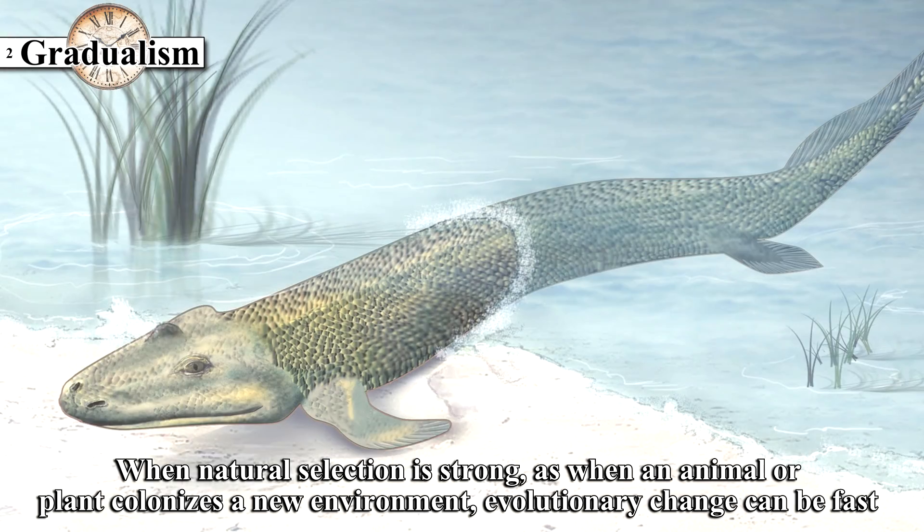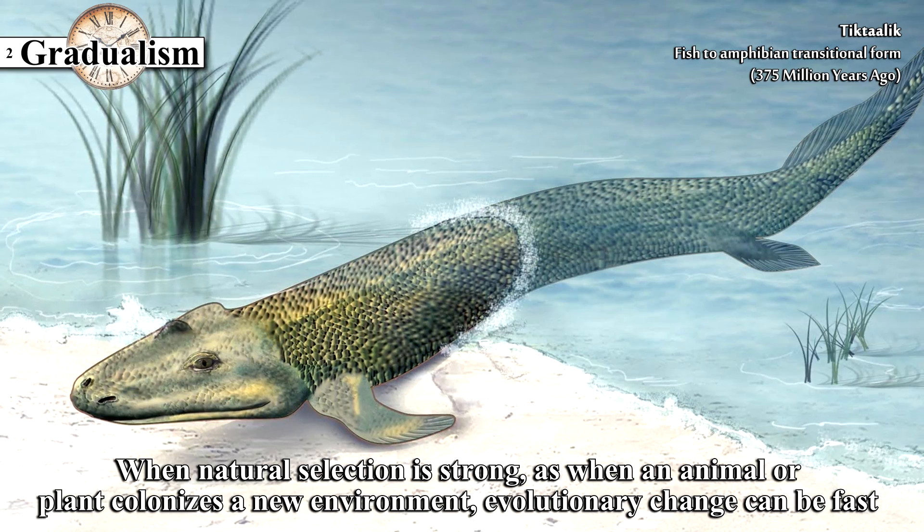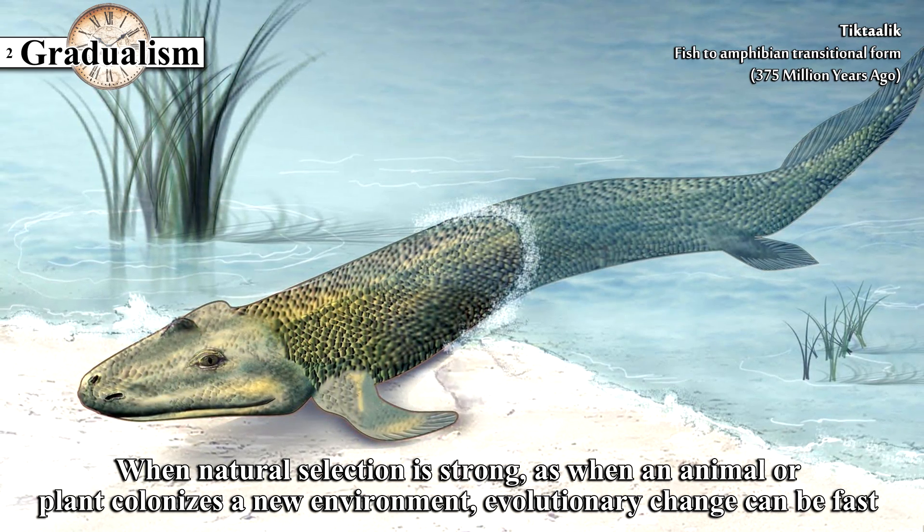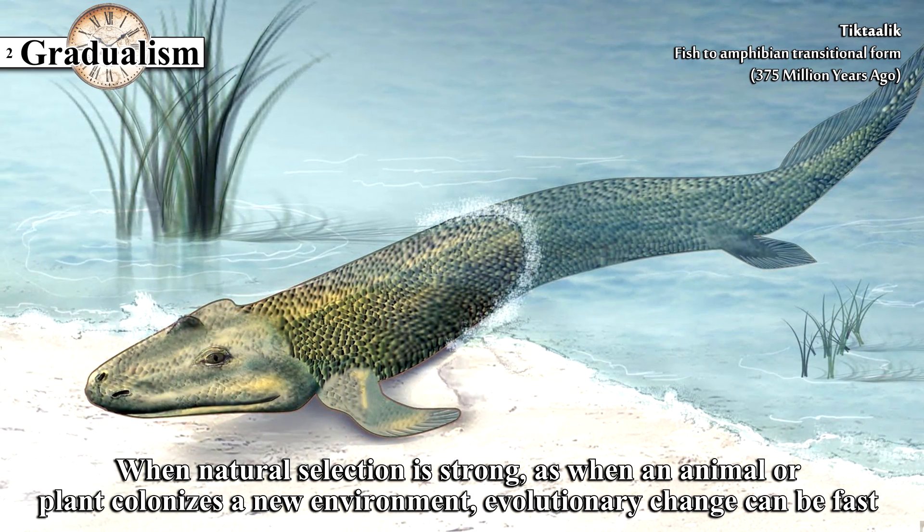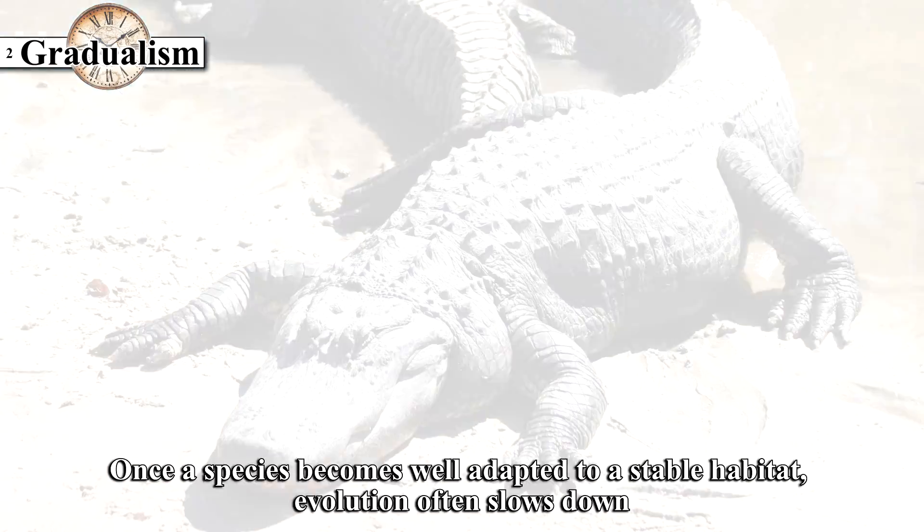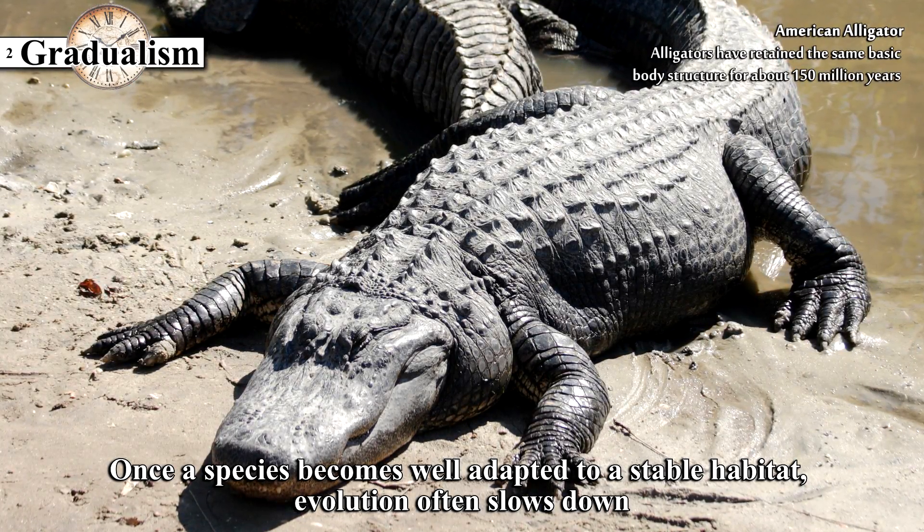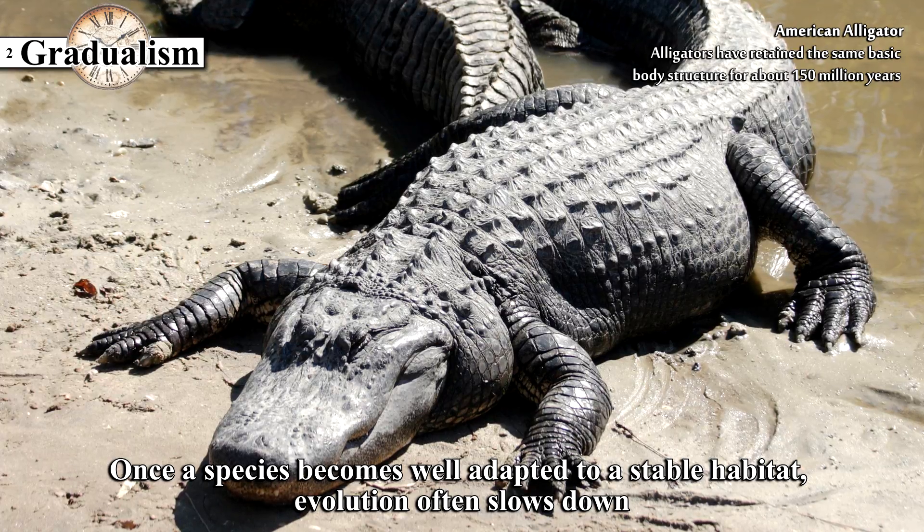When natural selection is strong, as when an animal or plant colonizes a new environment, evolutionary change can be fast. Once a species becomes well adapted to a stable habitat, evolution often slows down.